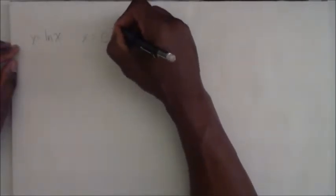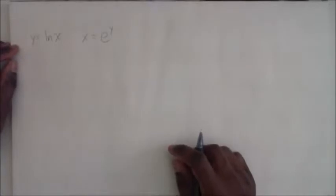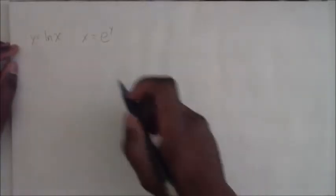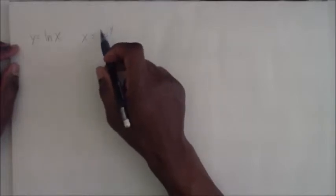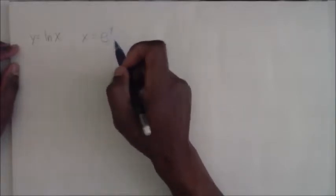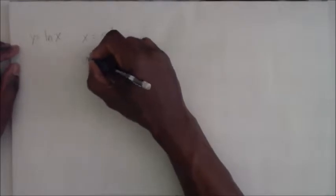Okay, so now if we take the derivative of x, we know that the derivative of e to a power will give you back the same function. So we can say now that dx over dy is still equal to e to the y.